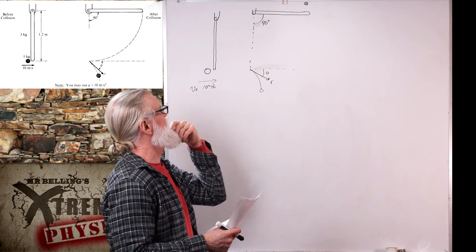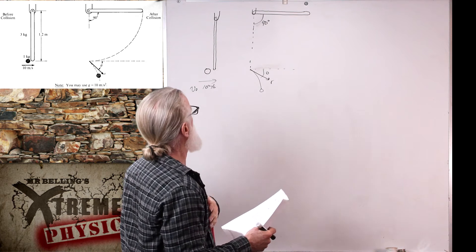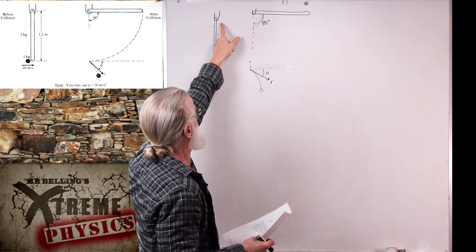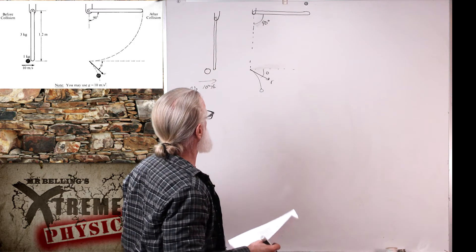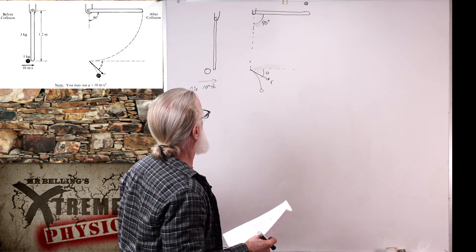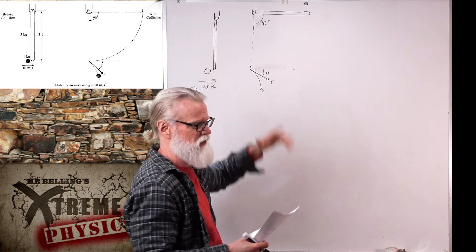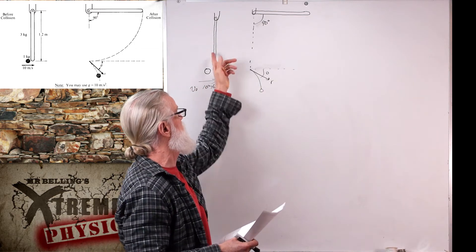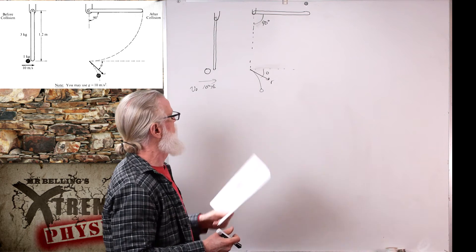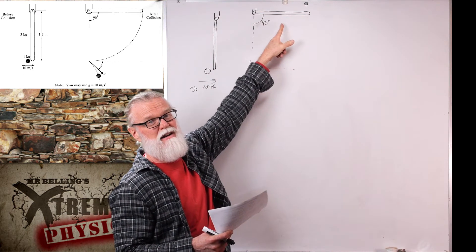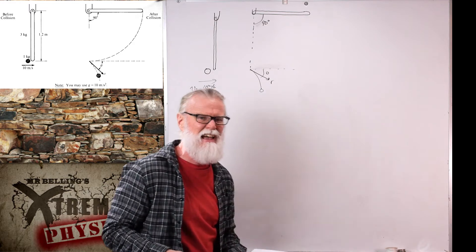Why is angular momentum conserved? Right now there is no net torque on the system. As long as this is a low-friction hinge when it hits, there's going to be no torque about the hinge. Once the bar starts rising, there will be a net torque from gravity. But right at the point of collision, angular momentum right before equals angular momentum right after. We need to define some points in time in this problem.